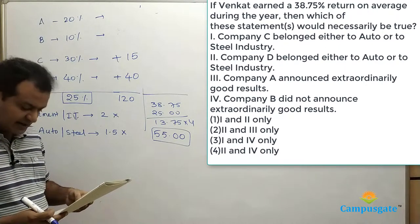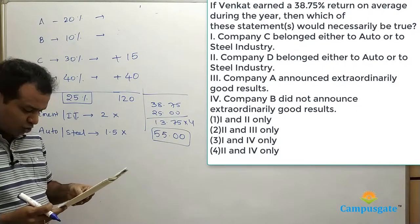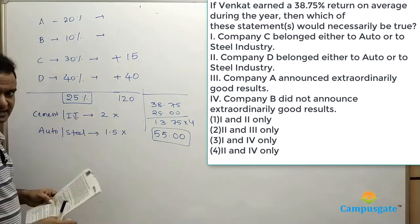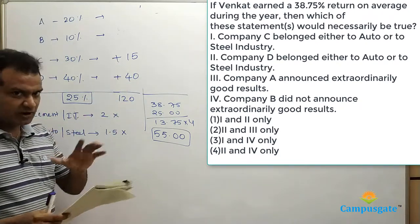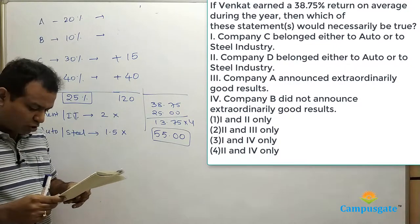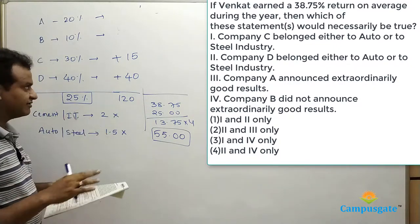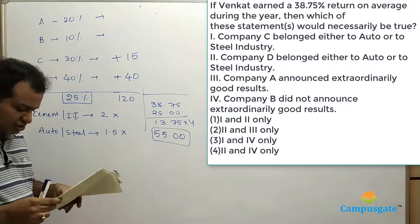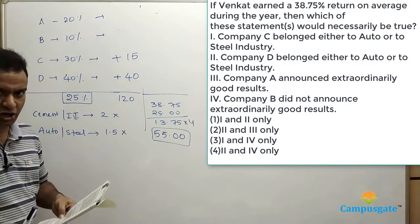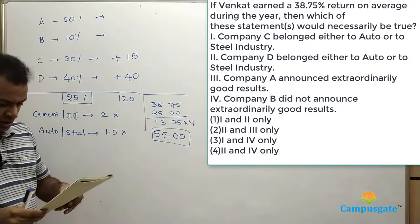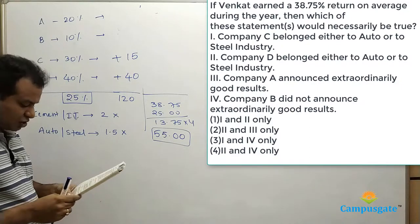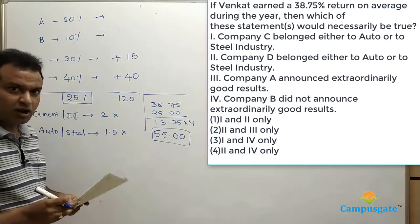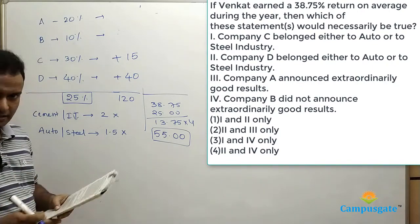Looking at the options: Option 1 — company C belongs to either auto or steel — that is exactly matching, so option 1 is correct. Option 2 — company D belongs to either auto or steel — wrong, because D belongs to IT or cement. Option 3 — company A announced extraordinary good results — in this case company A has not announced extraordinary good results, so that is ruled out. Option 4 — company B did not announce extraordinary good results — that is also true. Options 1 and 4 are correct, so we go for answer option 3.